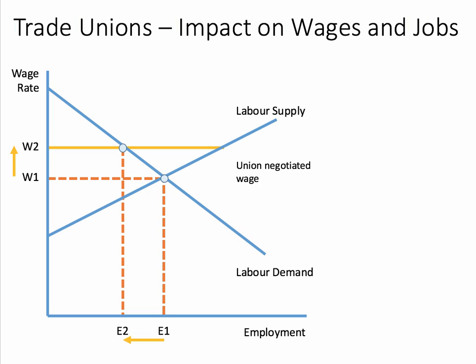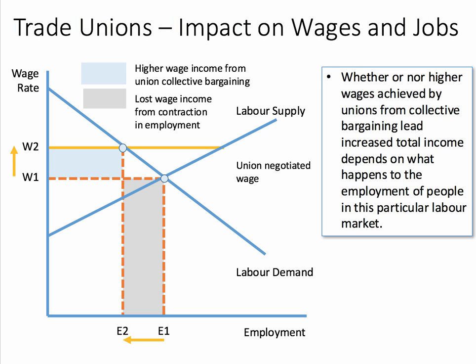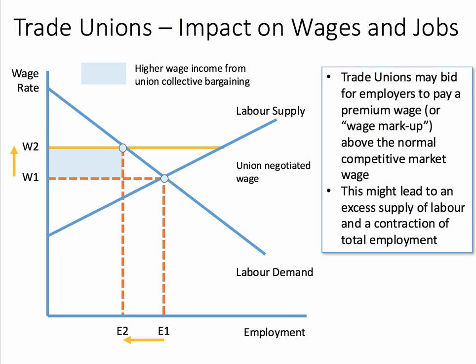Wages are higher than they were before, and some firms may decide to replace labour with capital machinery. The shaded area in blue shows the higher wage income resulting from union collective bargaining at W2 — that's the increase in wage income compared to the previous wage. However, employment has also fallen. The fall in employment is shown in the shaded grey area from the contraction in employment. Trade unions may bid up the wage — we call this the trade union wage premium or the wage markup — above the normal competitive wage, but this can potentially lead to an excess supply of labour and a contraction of employment.